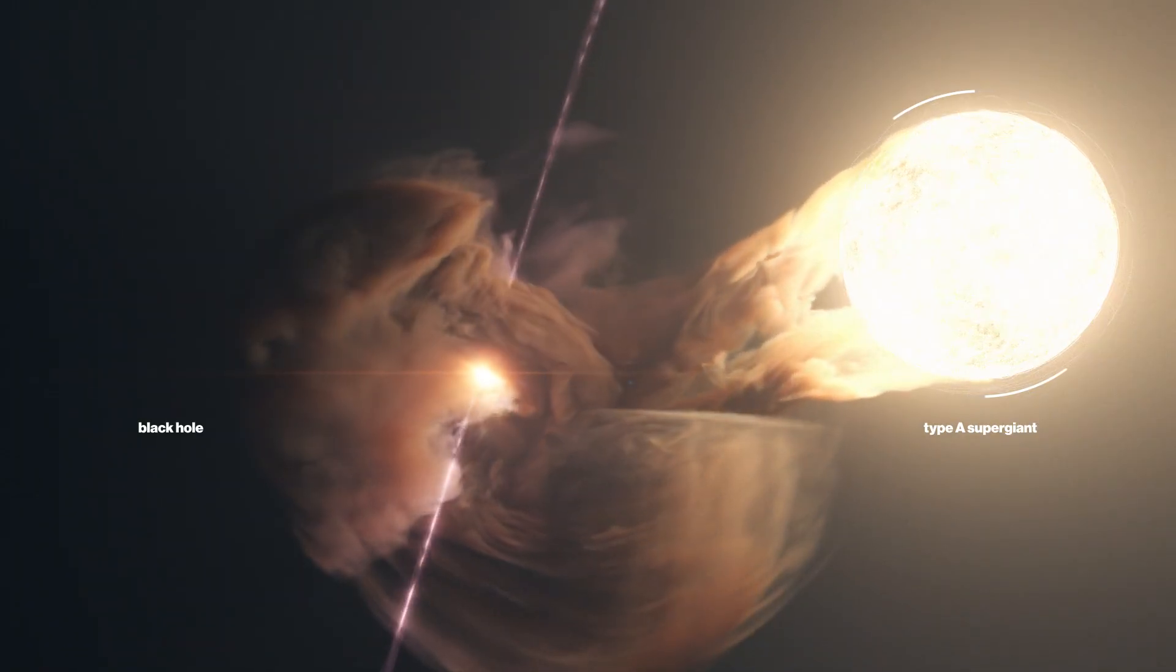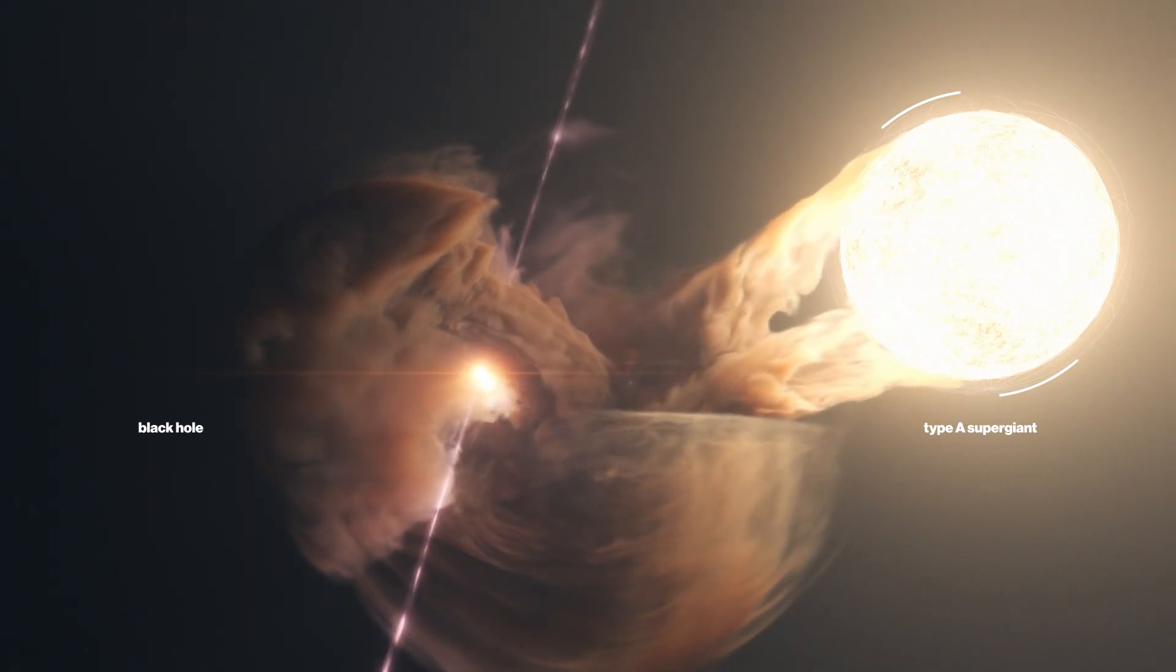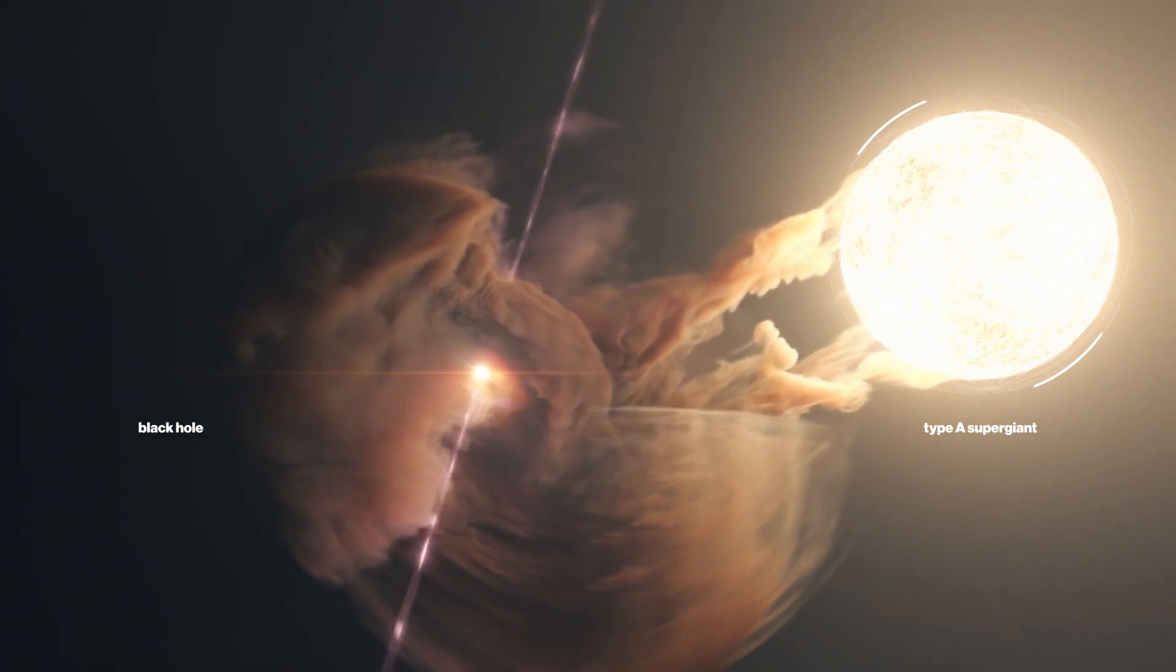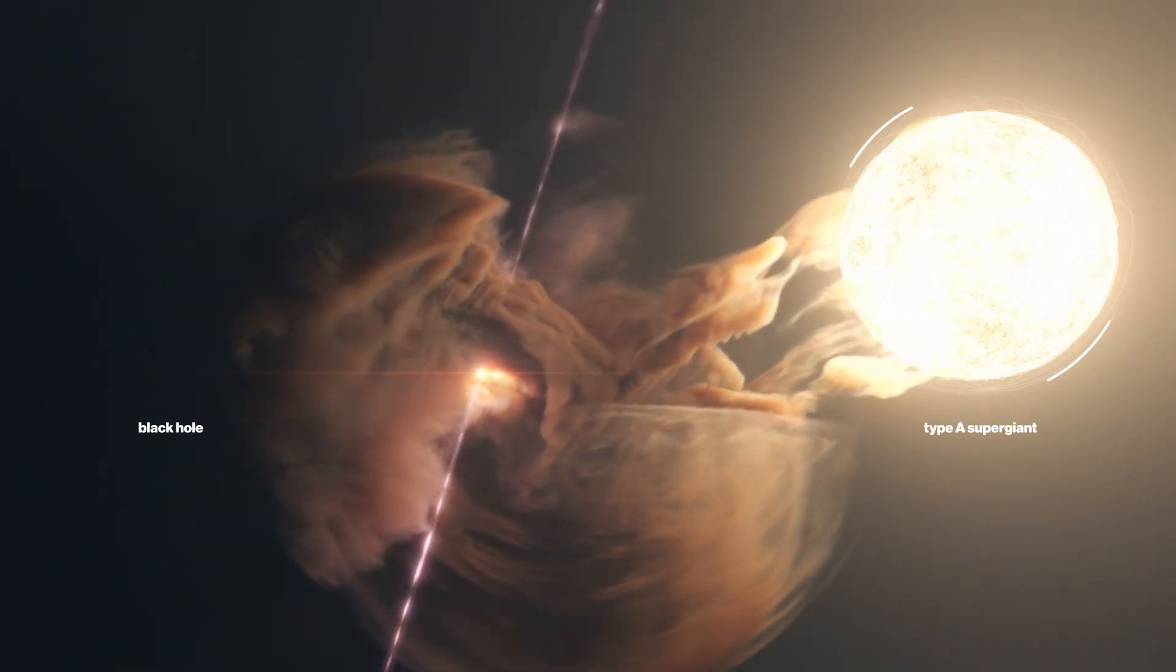At the center of the nebula is the microquasar SS433, a binary system that hosts a black hole devouring its companion star.